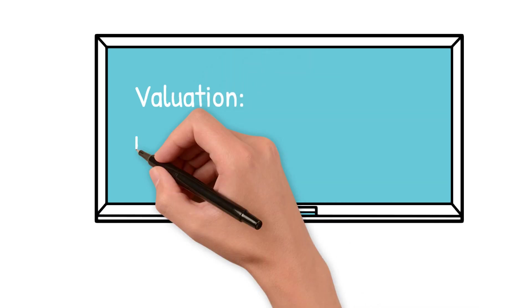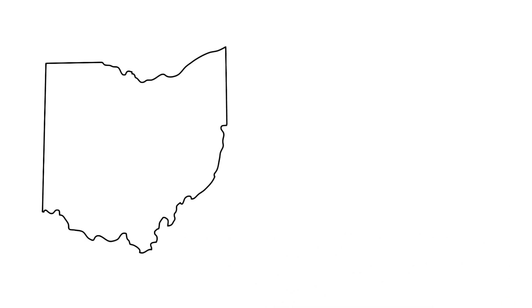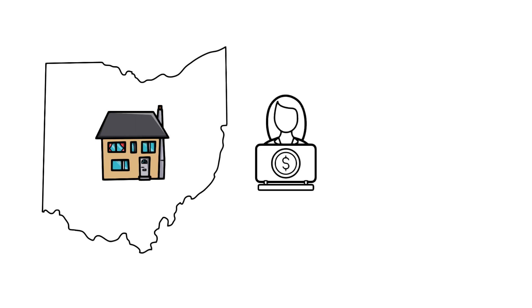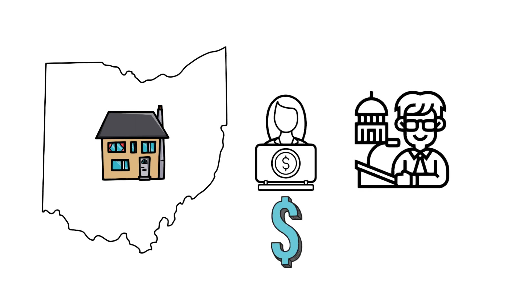This is where valuation comes in. Valuation just means how much my parents' property is worth. In the state of Ohio, the county auditors are the ones who appraise the properties, and then the state approves it.